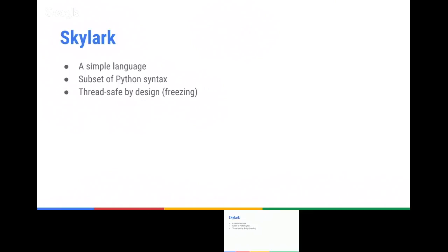When a .bzl file is loaded for the first time, we cache the result and can reuse it many times because we know it will never change. Skylark is hermetic by design, so you cannot access things from the operating system, the filesystem, network, and so on. And it is deterministic by design — whenever you evaluate the code, it will always return the same result.